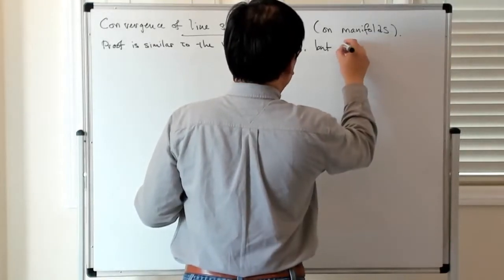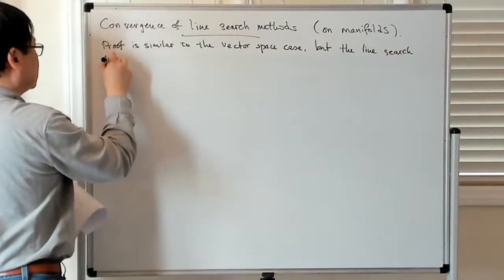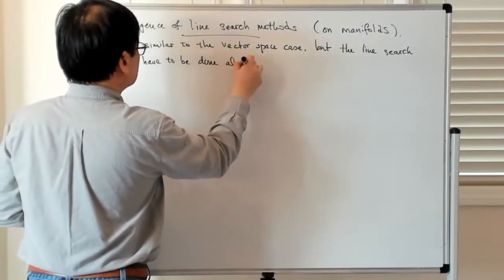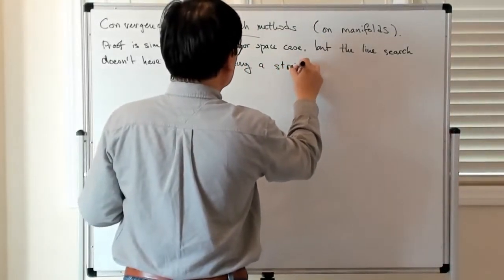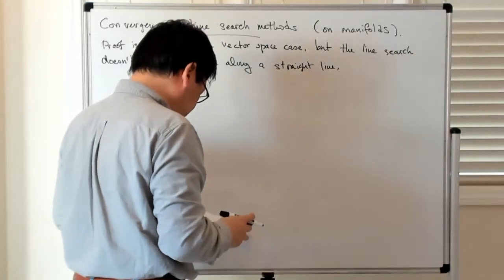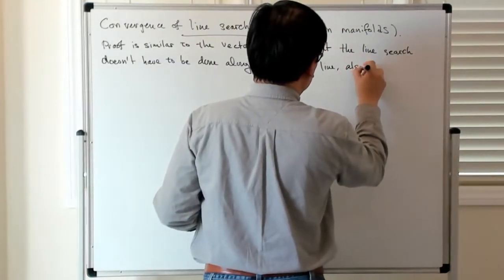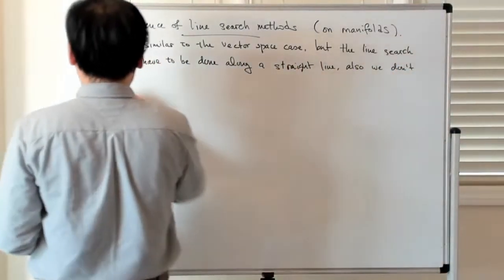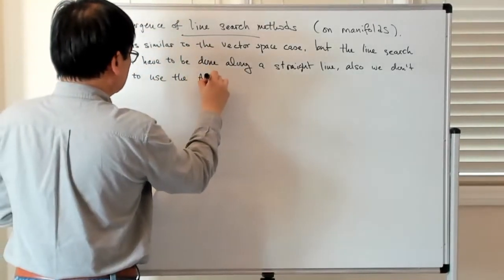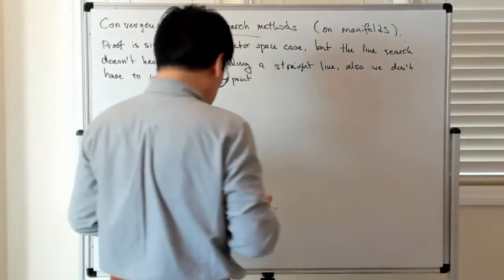But the line search doesn't have to be done along a straight line. And the other thing is that you don't necessarily have to choose the immediate point, so long as the rate of descent is somehow comparable, or better.